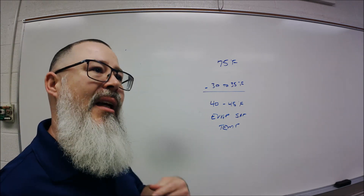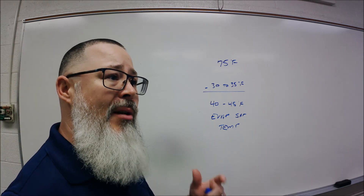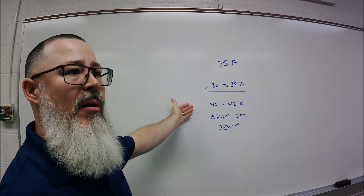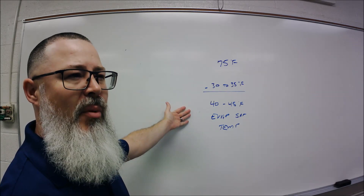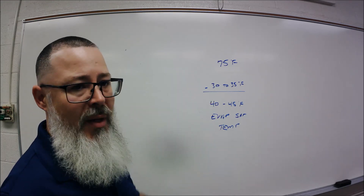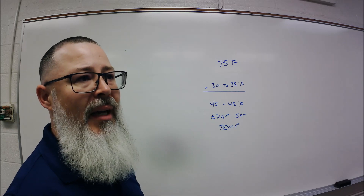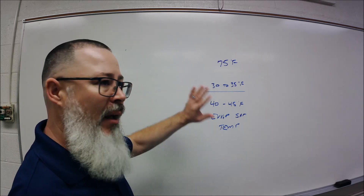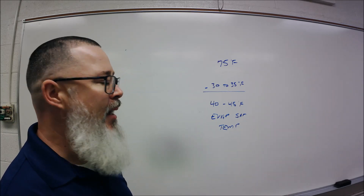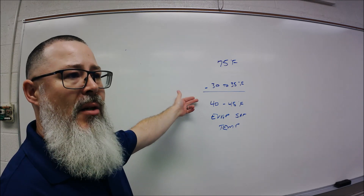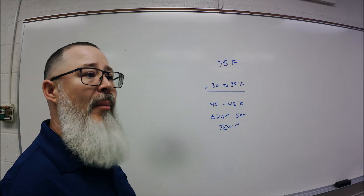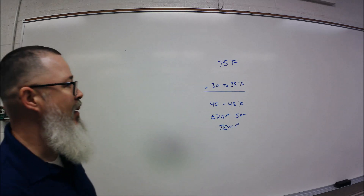I personally like to work in a range. For R22, a 40-degree saturation point is right at 69 or 70 PSI on an analog gauge set, all the way up to 76 PSI at a 45-degree mark. For R410A, you take that same 40 to 45-degree saturation temperature and come up with 119 to 120 PSI on the low side, up to about 130 PSI.